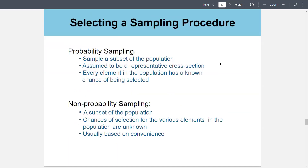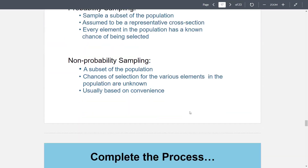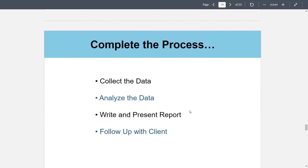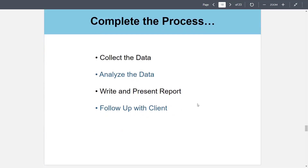Selecting a sampling procedure: probability sampling uses a sample subset of the population assumed to be a representative cross-section, where every segment has a known chance of being selected. Non-probability sampling uses a subset where chances of selection are unknown — usually based on convenience. Complete the process: collect the data, analyze the data, write and present a report, follow up with the client.